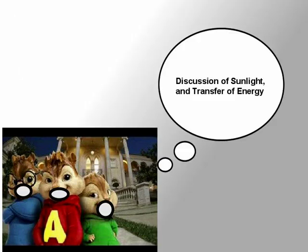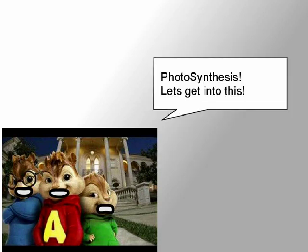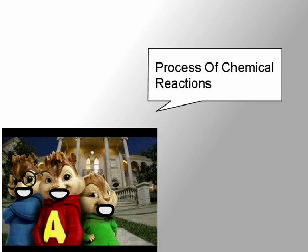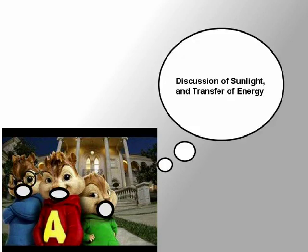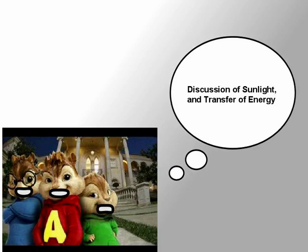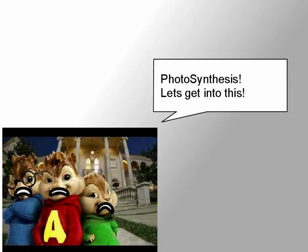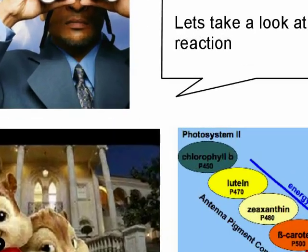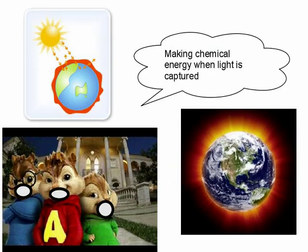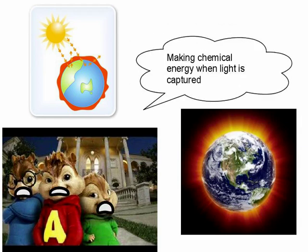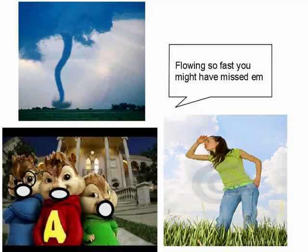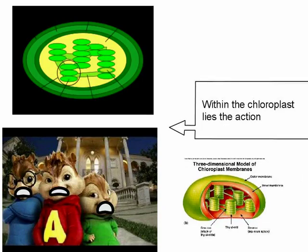Photosynthesis — into the discussion of sunlight and transfer of energy, into the process of chemical reaction of energy. Let's take a look at the light reaction. It makes chemical energy when light can catch it. Electrons flow through the photosystems, flowing so fast you might have missed them. But then the chlorophyll flies into action.